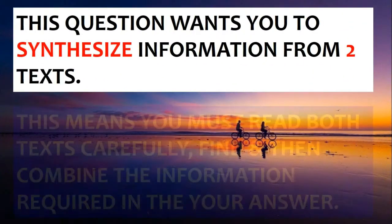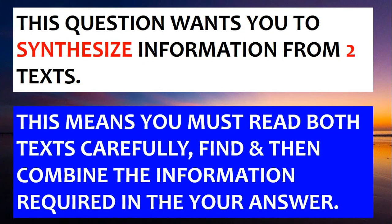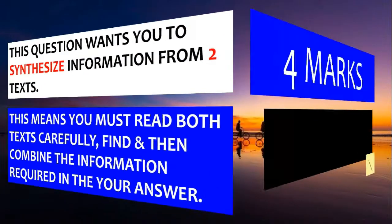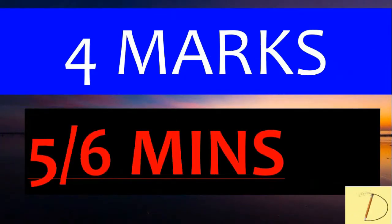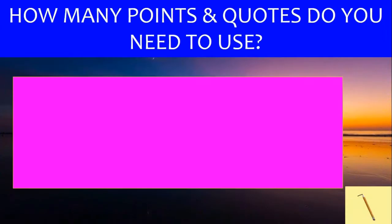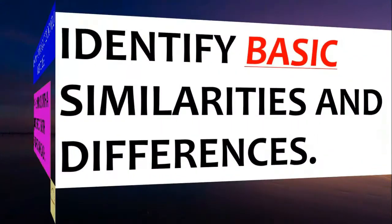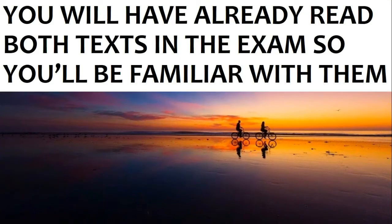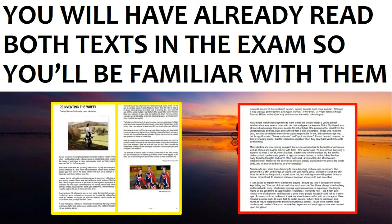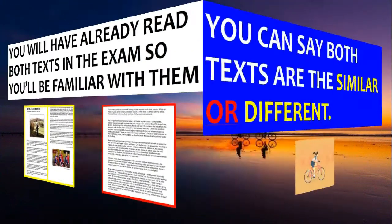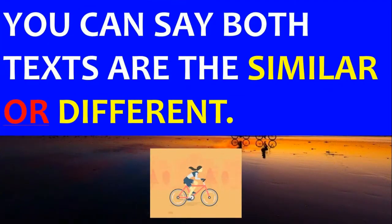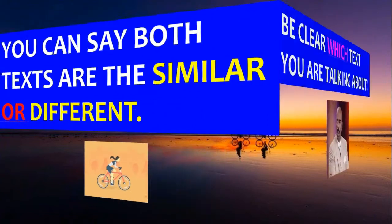This question wants you to synthesize information from two texts. This means you must read both texts carefully, find, and then combine the information required in your answer. It's worth four marks, so you should spend five to six minutes on it. You need to make two points with a quote from both extracts on each, and identify basic similarities and differences. You've already read both texts in the exam, so you'll just be scanning the information at this stage.